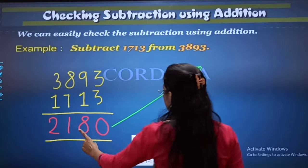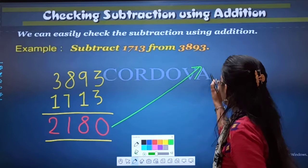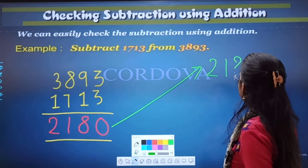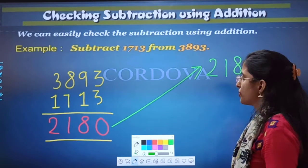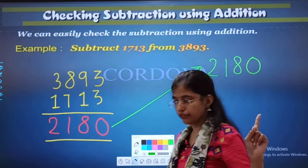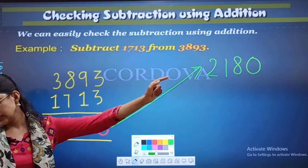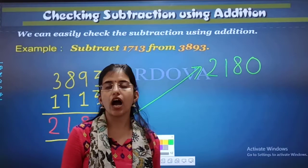Now, come on. Let's start. 2180. So, 2180. Correct? Difference which we will write here. Okay?